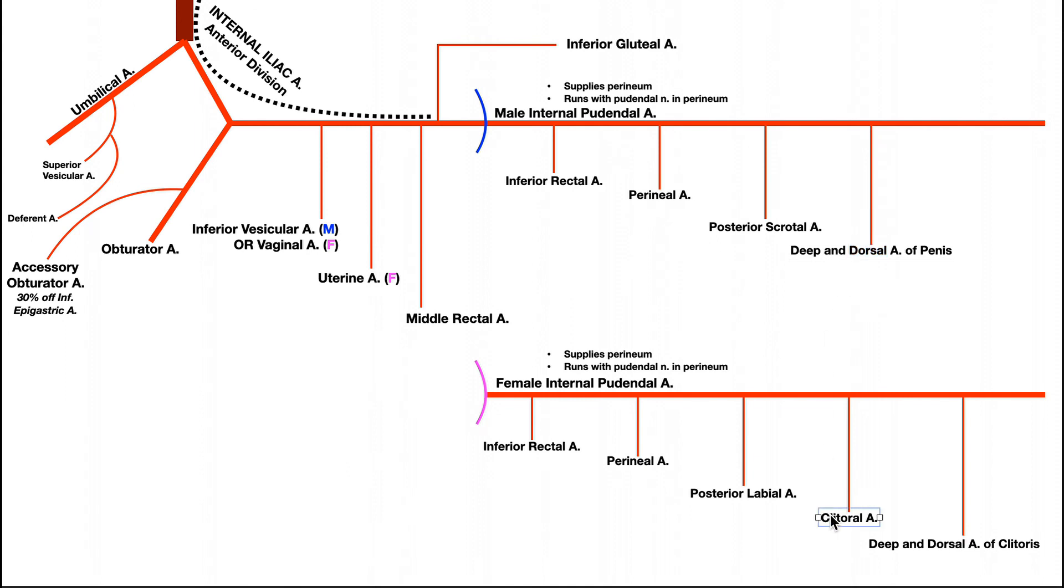But in females, we don't have that structure. We have a clitoris. So in females, it actually gets one extra artery. So right here, we have just the general clitoral artery. And then we also have two arteries right here. One of them is the deep artery of the clitoris. And the second one is the dorsal artery of the clitoris.